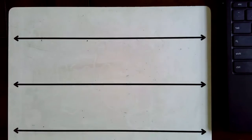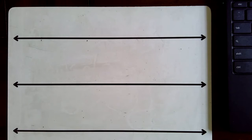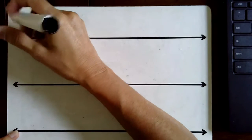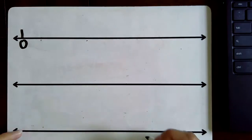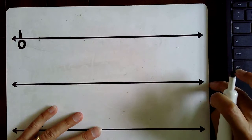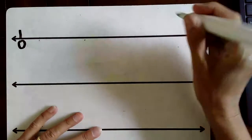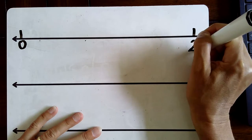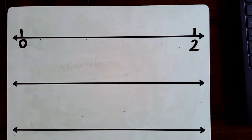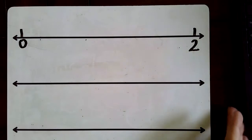Today, we are going to be working with number lines to model some fractions. And today, we're going to do something a little bit different. Instead of ending our number line with the number one, we are going to go past the number one. On the first number line, we're actually going to end with the number two — showing two wholes on this number line.